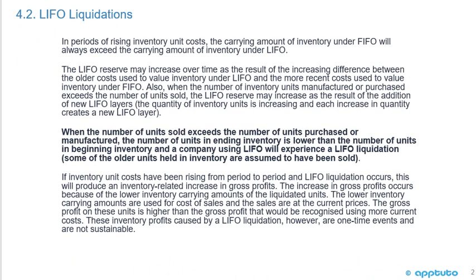In periods of rising inventory unit costs, the carrying amount of inventory under FIFO will always exceed the carrying amount of inventory under LIFO. Because with FIFO (first in, first out) and rising prices, the less expensive inventory is gone and what's left is more expensive. Under LIFO (last in, first out), the more expensive inventory is gone, leaving the less expensive inventory.